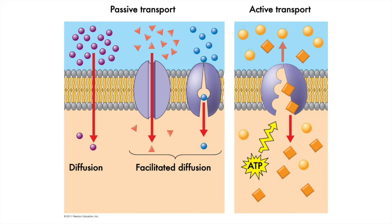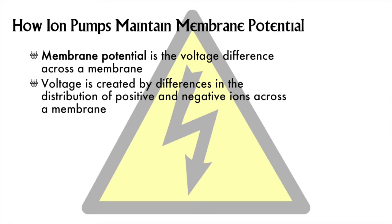In active transport we can move things up their concentration gradients. Water will run downhill with no input of energy — gravity does the work. But to get water to go uphill you need a pump, and that pump requires an energy source. So back to the questions about the sodium-potassium pump: why pump ions against their gradient at all, and why in unequal proportion?